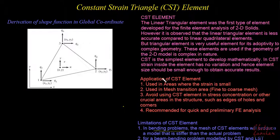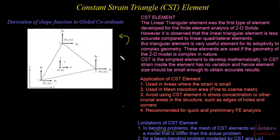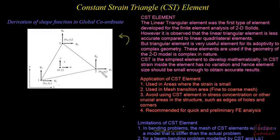So let us start deriving the shape functions in global coordinates. This is our typical element which we had seen last time. The numbering of the nodes in this element is always done in the anti-clockwise direction to avoid the problem of negative area. Here is the first node, the second node, and the third node in anti-clockwise manner, and these are the degrees of freedom.